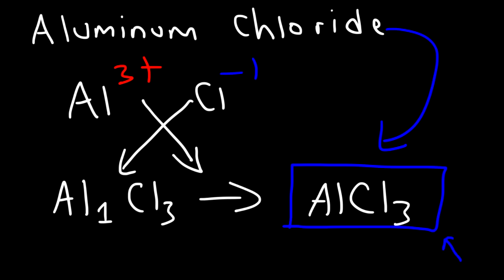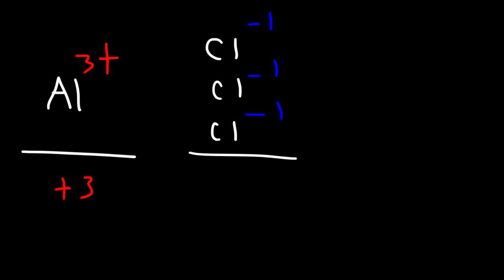Now let's make sense of it. So why do we need the 3? The answer is to balance the charges. We have one aluminum ion with a 3 plus charge, so the total positive charge in this compound is positive 3. To balance that 3 plus charge, we need 3 chloride ions, each with a negative 1 charge,